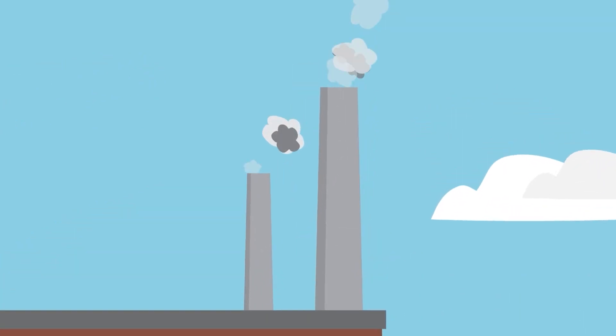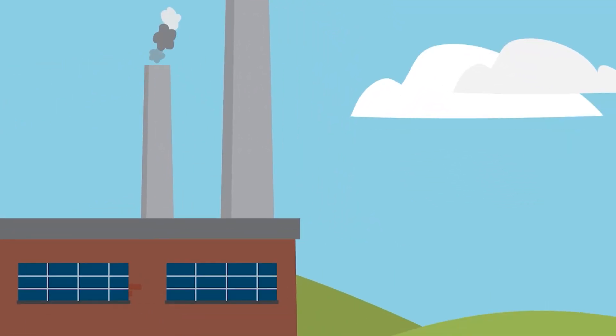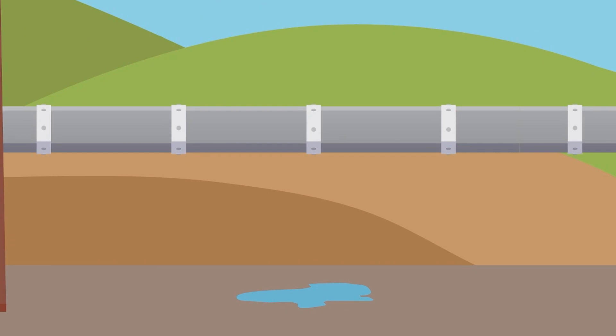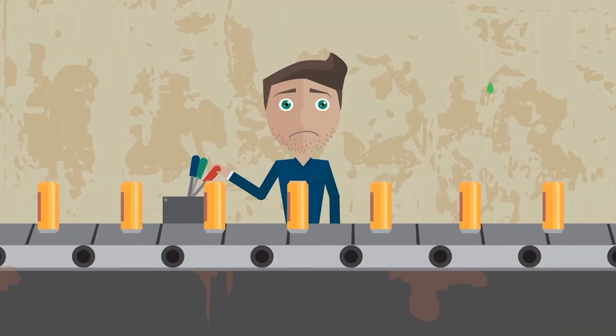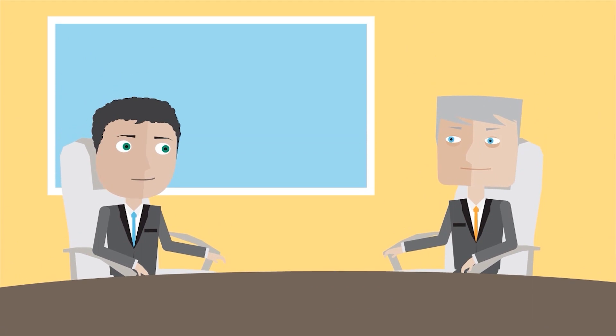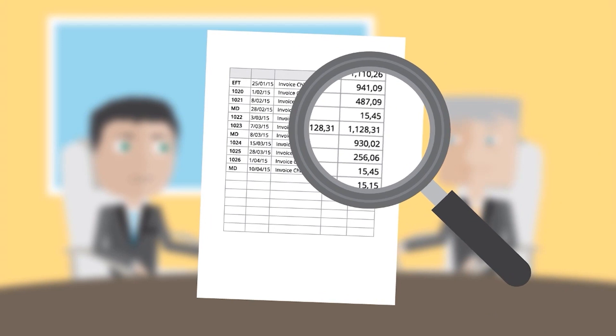ESG criteria measure environmental issues such as CO2 emissions and water consumption, as well as social values such as respect for employees and labor rights, and aspects of governance such as an independent board of directors and accounts auditing by an independent committee.